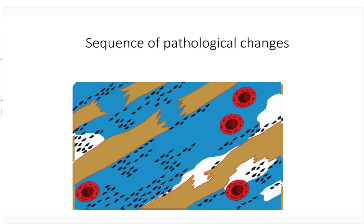We don't go from normal tendon to completely degenerative tendon overnight — that's worth considering with patients. Where do they fit on the continuum of change, from the cell end right through to the degenerative tendon? This is the continuum that Jill Cook and Craig Purdom first published in 2009, and we've recently published an update in the British Journal of Sports Medicine.